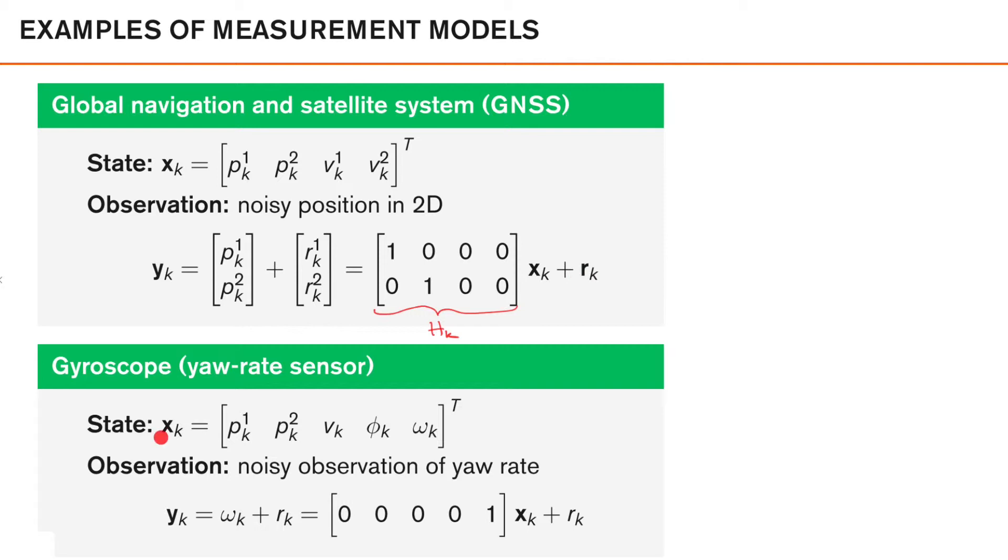As a second example, let's assume we have a coordinated turn motion model, such that the state vector has the following parameters. Now, if we get a measurement from a gyroscope set to measure yaw rate, that is the angular velocity in the x and y plane, we simply get noisy observations of yaw rate.